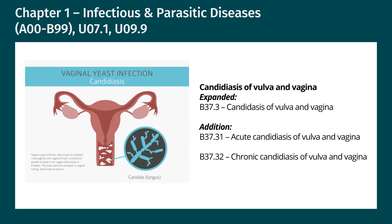For candidiasis this year, the change is that code B37.3, which was used for candidiasis of vulva and vagina until now, has been expanded for additional specificity into two new codes, effective October 1st, 2022. One code is for acute candidiasis of the vulva and vagina, code B37.31. The other code is for chronic candidiasis of the vulva and vagina, which is code B37.32.